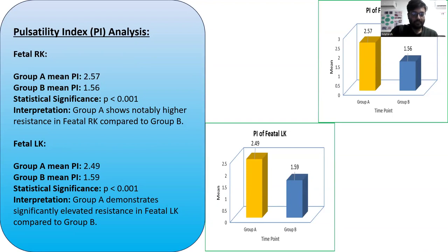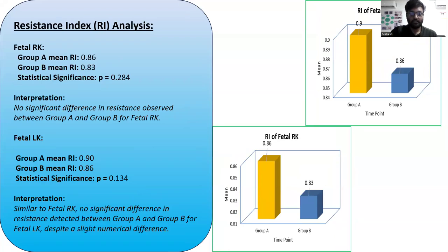Further PI analysis was done for both kidneys. The mean PI of the fetal renal artery in Group A was approximately 2.5, which was higher than Group B, with a statistically significant p-value less than 0.001. RI values were also calculated and analyzed. There was no significant difference in resistance index between the groups for both kidneys, despite a slight numerical difference.